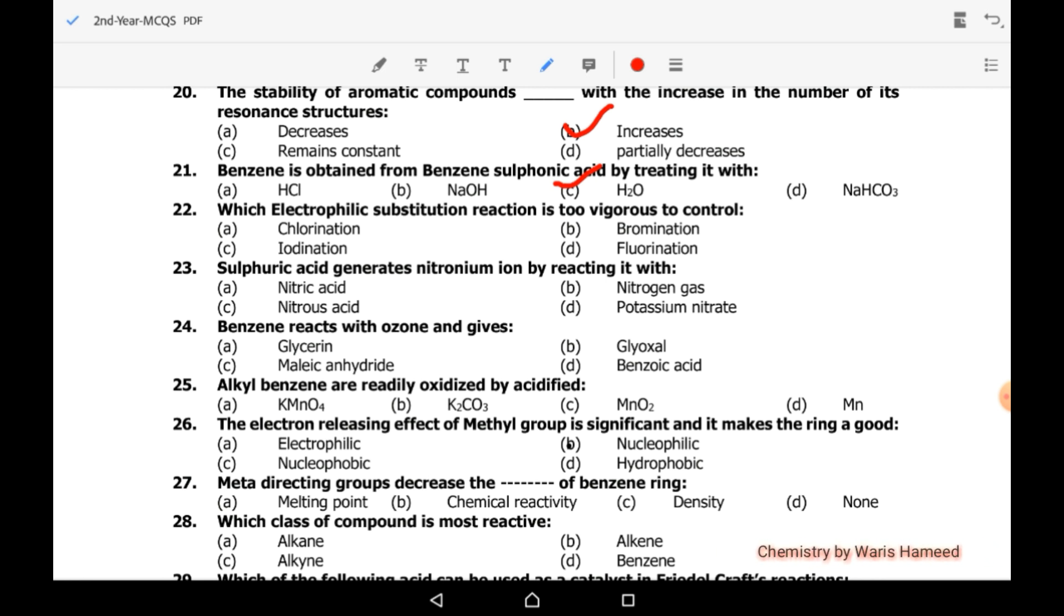Of which electrophilic substitution reaction is too vigorous to control? It's fluorination. Sulfuric acid generates nitronium ion by reacting with nitric acid. It's actually the nitration of benzene ring. Benzene reacts with ozone to give glyoxal. Three molecules of glyoxal.